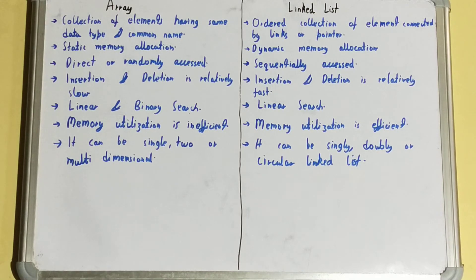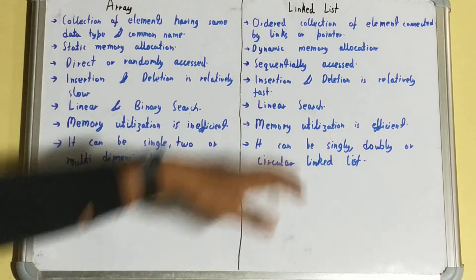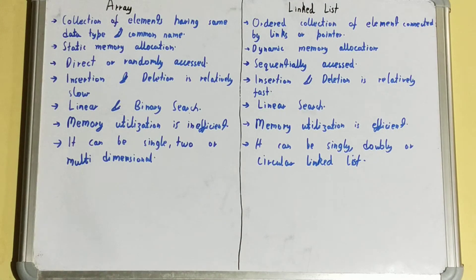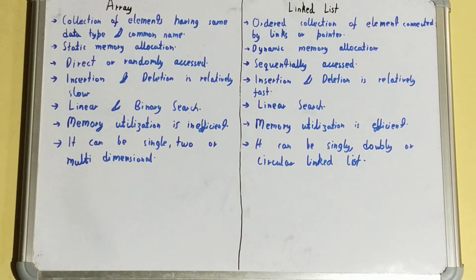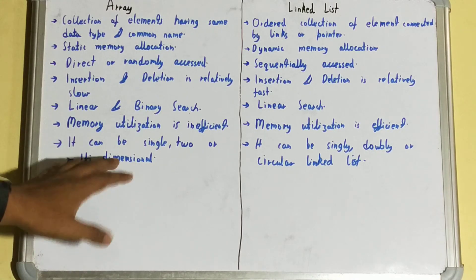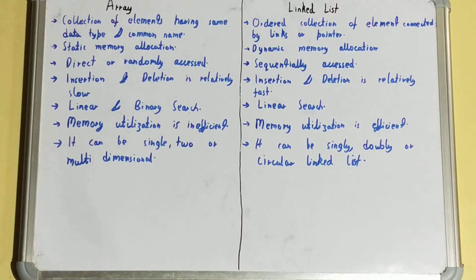Memory can go to waste if the array is not fully utilized, making memory utilization inefficient. In a linked list, memory utilization is efficient because dynamic memory allocation ensures no memory is wasted — memory is allocated only on demand. Arrays can be single, two, or multi-dimensional, while linked lists can be singly, doubly, or circular linked lists.